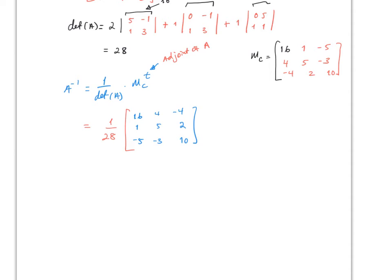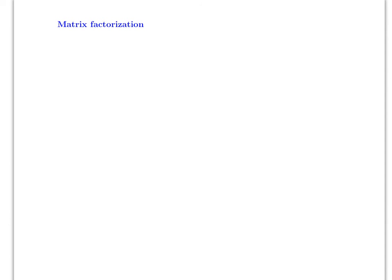That's it for determinants. Now we move to section 6.5, which covers matrix factorization. In this section we're going to cover matrix factorization, and there are actually many ways to factorize a matrix. We're only going to focus on one specific method.